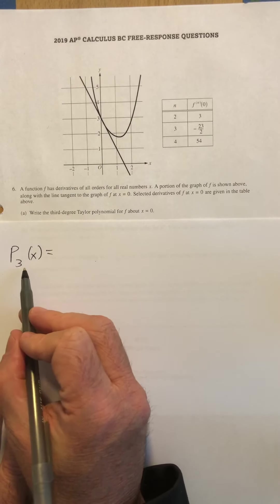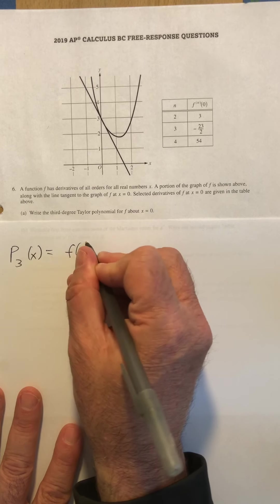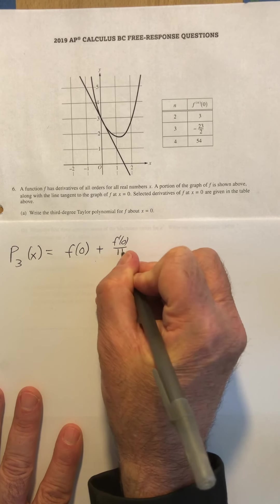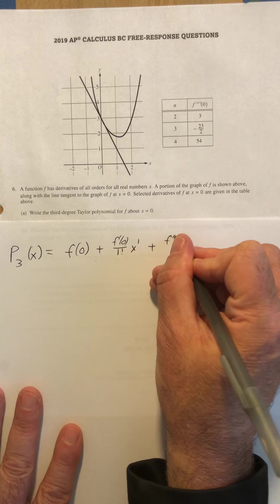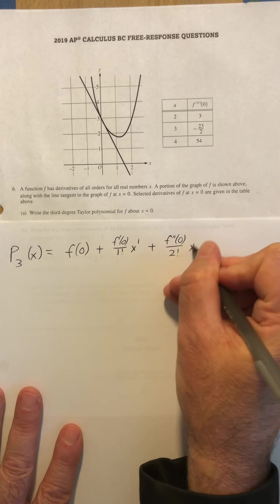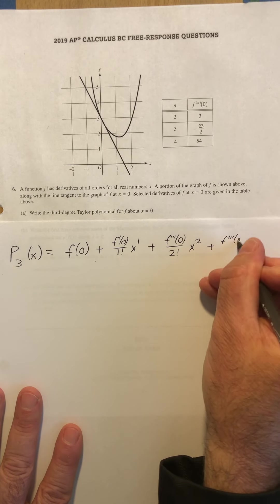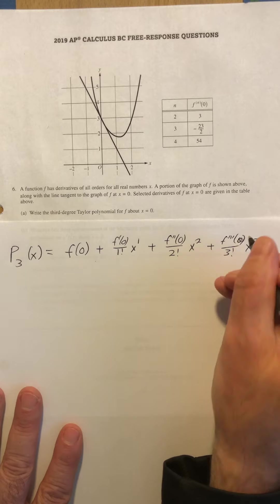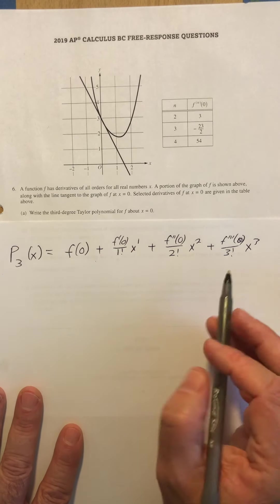The third degree Taylor polynomial is going to be the value of the function at zero, plus the value of the derivative at zero divided by one factorial times x to the first, plus the value of the second derivative at zero over two factorial times x squared, and then the third derivative at zero over three factorial times x to the third. By now we should kind of get that formula down, but that's what I'm looking for.